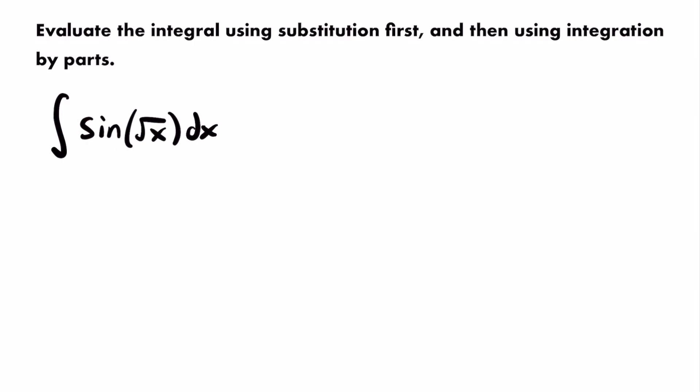When we do that, we usually want to make sure that the derivative of whatever we set u equal to is also found within the integral. That's typically what we look for. Now in this case, that's not going to happen. If we set u equal to the inside function of the square root of x, the derivative of that is nowhere to be found within this integral. So it might seem that u-substitution isn't going to help — but it is. U-substitution is just the first step, because after we use it to rewrite our integral in terms of u, we'll have an integral we can solve using integration by parts.